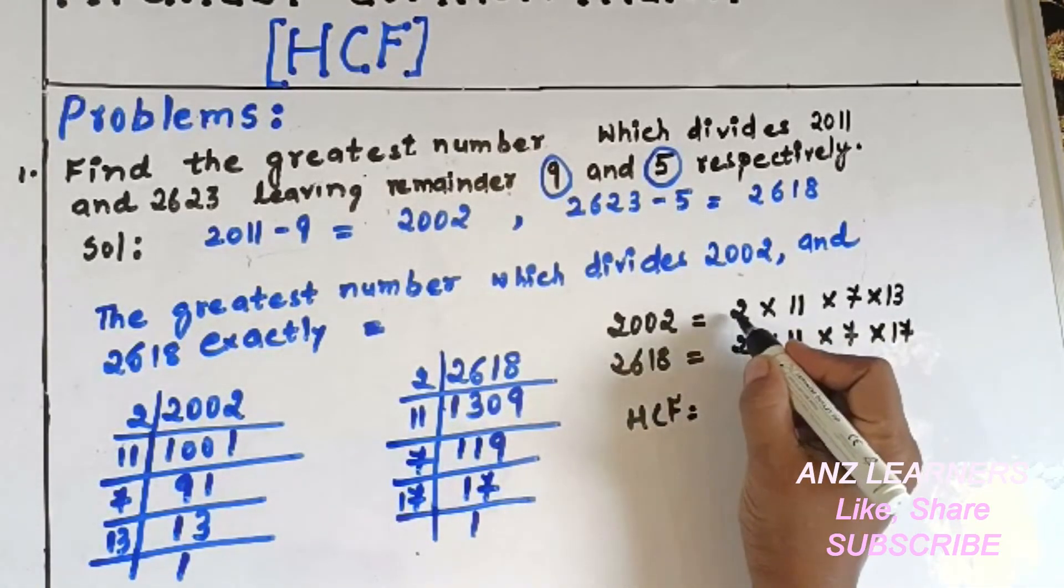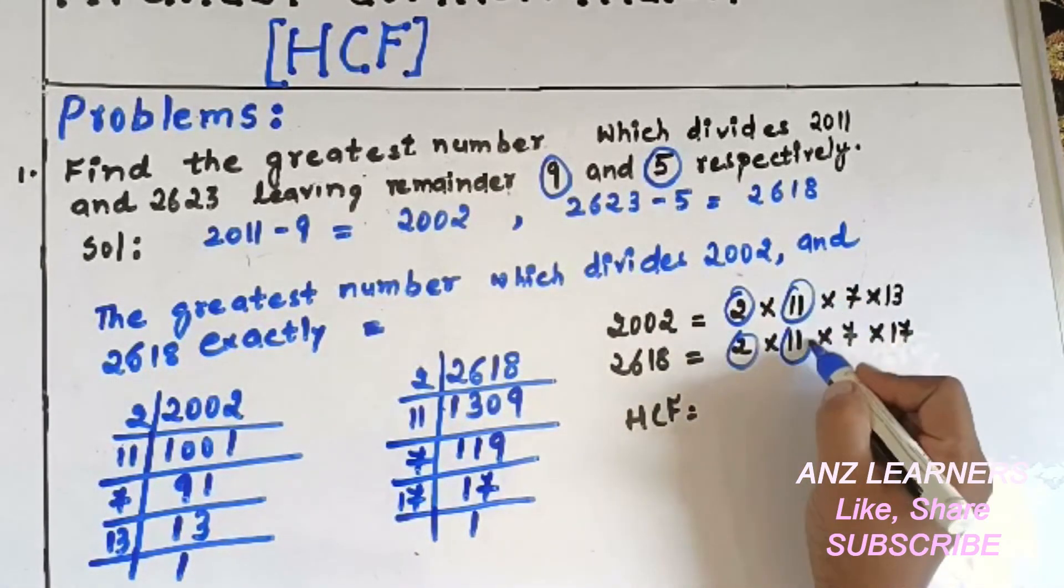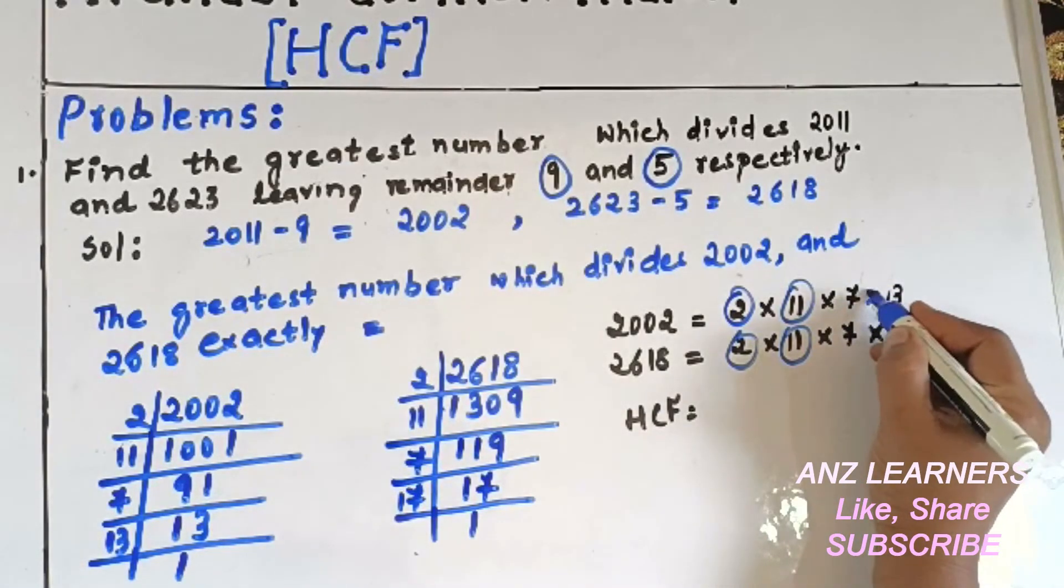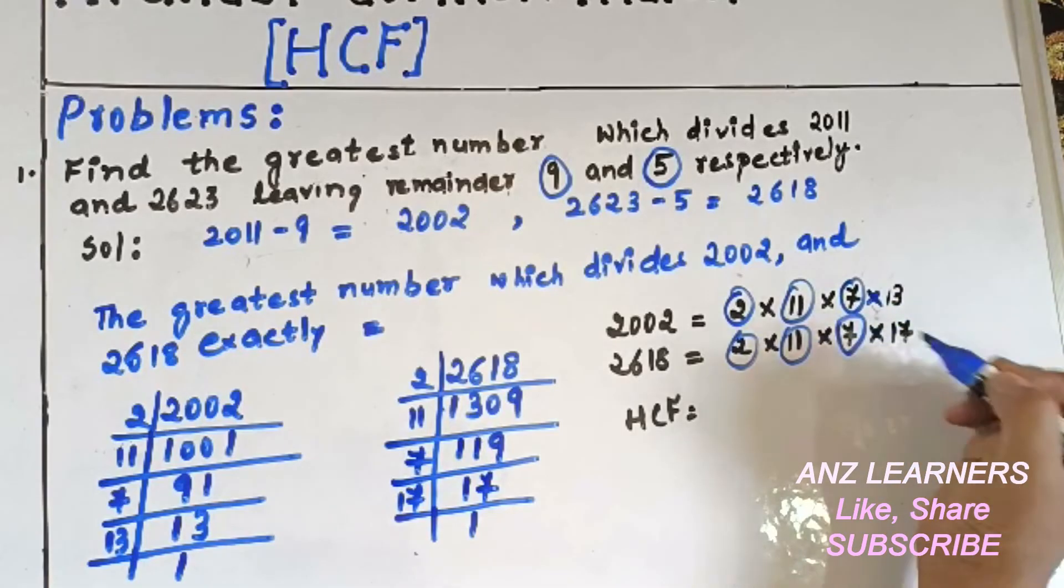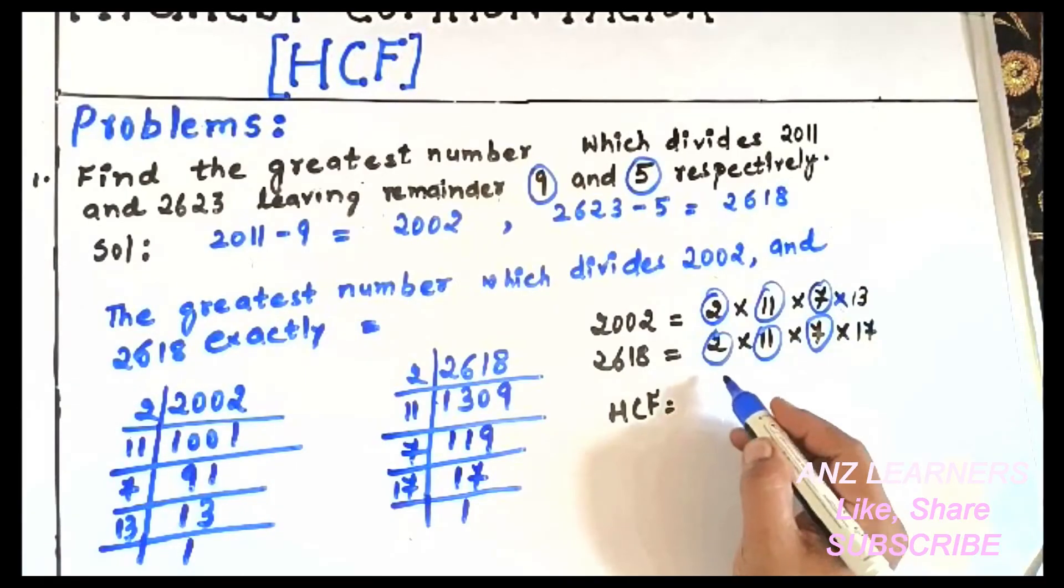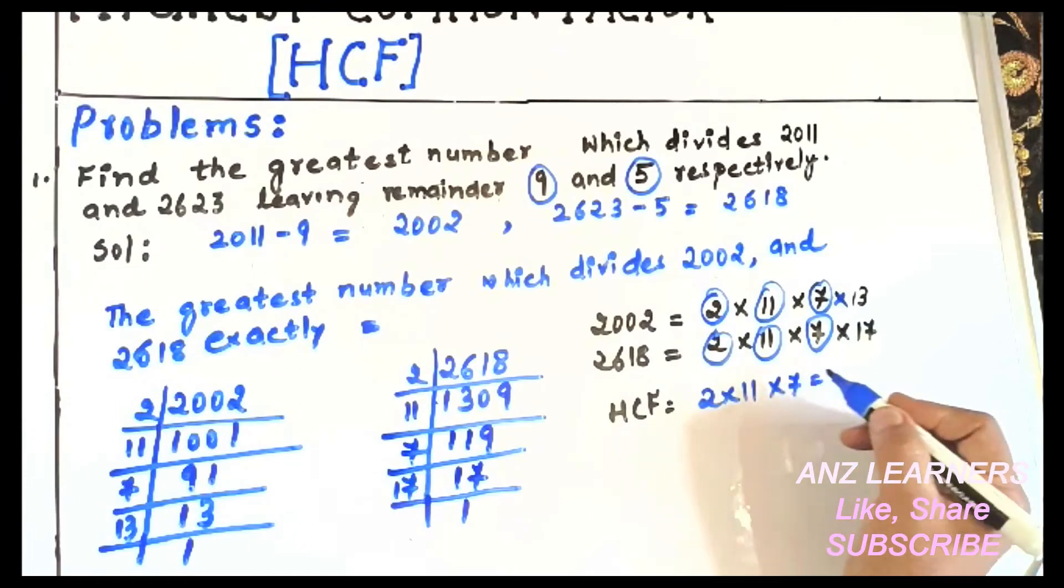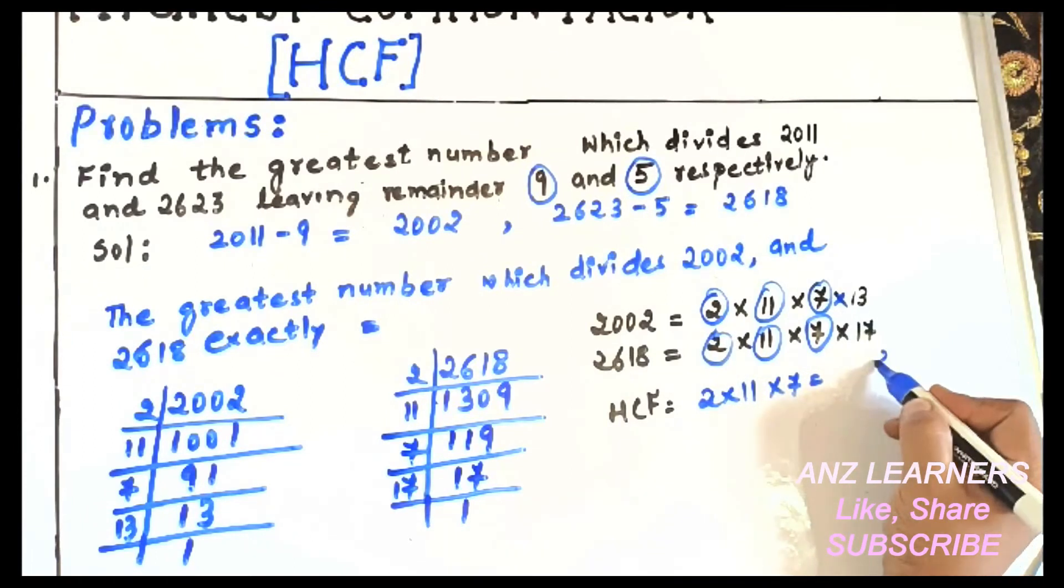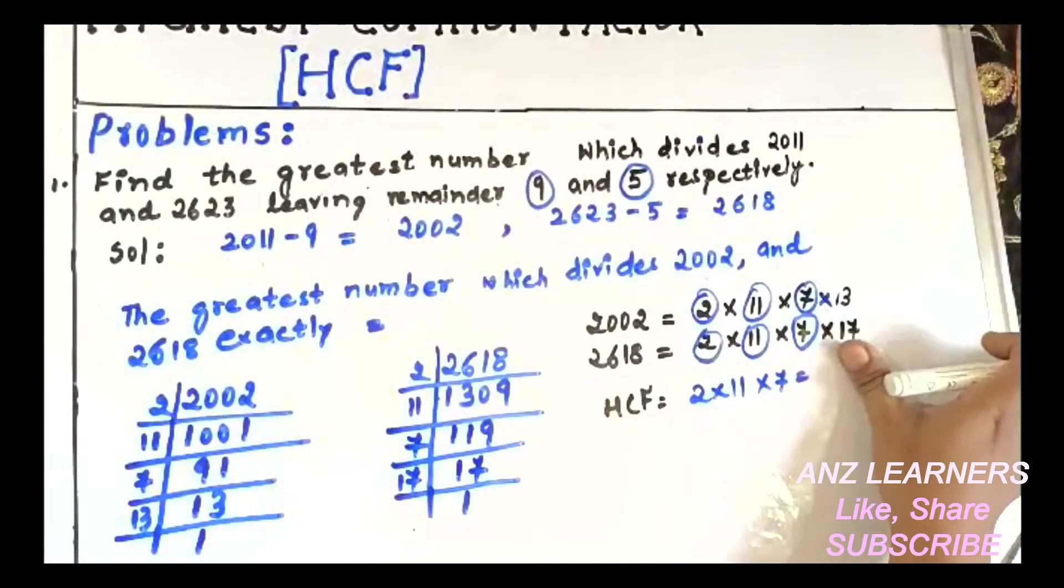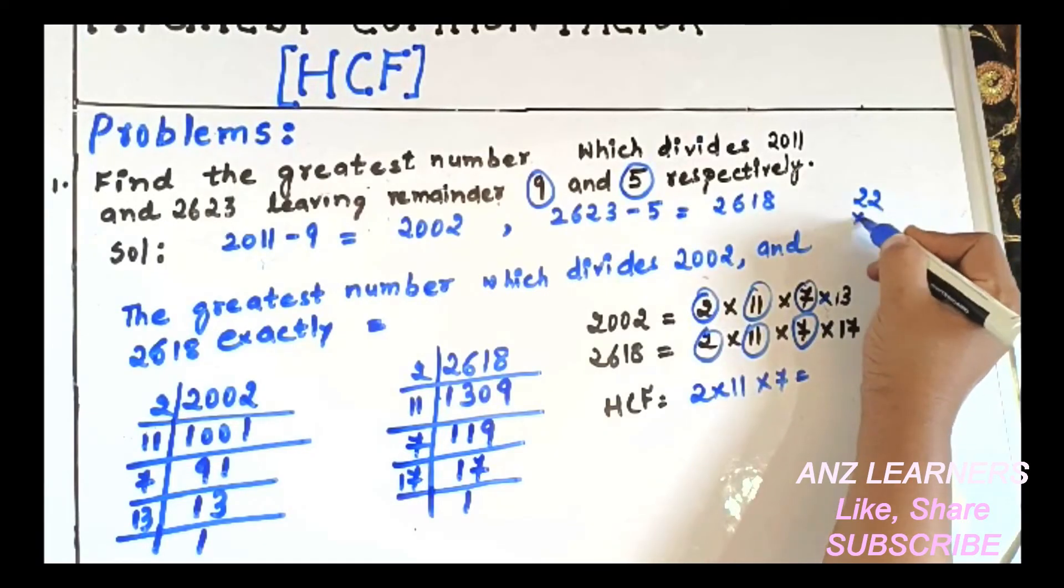will be... see here we have 2 × 11... sorry, 13 is not in both numbers. So we will multiply 2 × 11, which equals 22, then 22 × 7